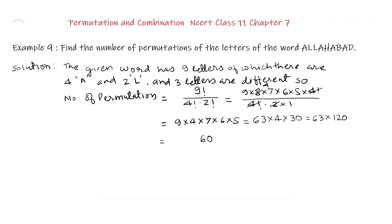12 times 3 is 36, we write 6 and carry 3. 12 times 6 is 72 and 3 is 75.